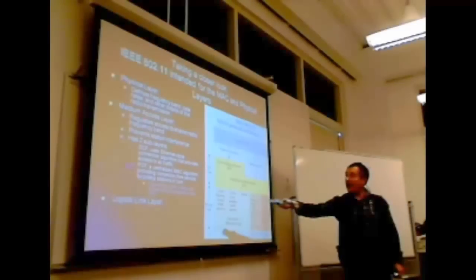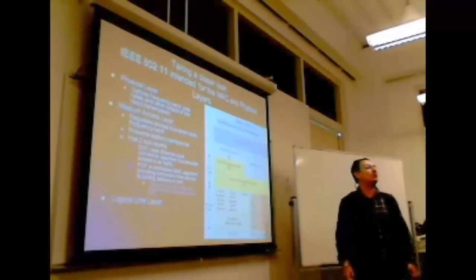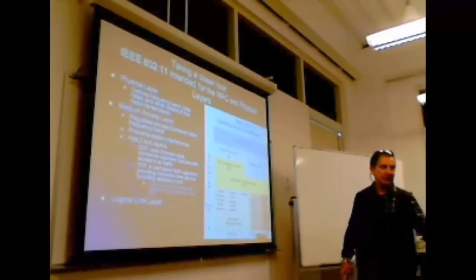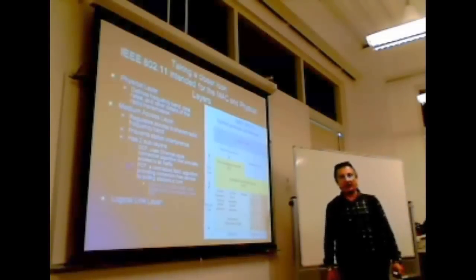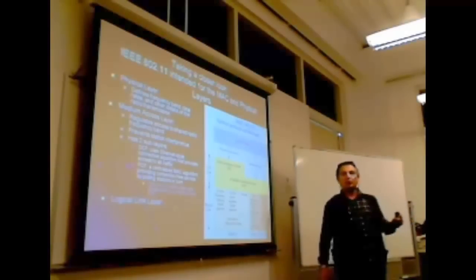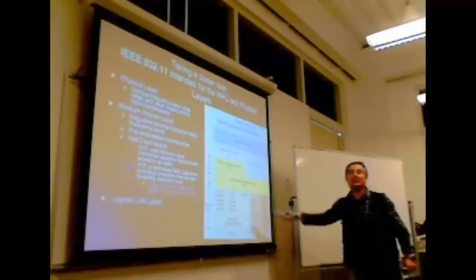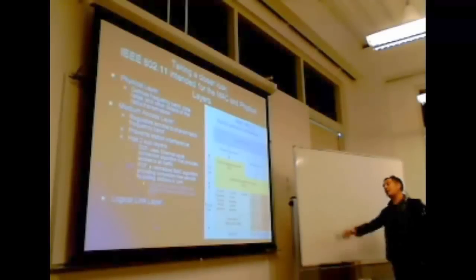And this point coordinator function, PCF, is going to have a centralized MAC algorithm providing contention-free service by polling stations in turn. In other words, it's going to await the congestion for that particular wireless channel. When the channel is available, they are going to poll the guy. They will say, okay, go ahead and use it based on this DCF. But anyway, this is for the wireless networks.